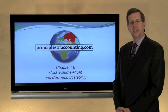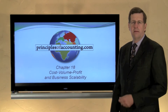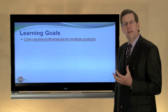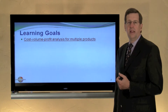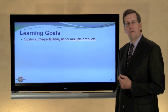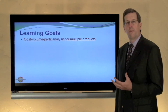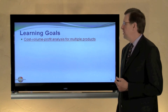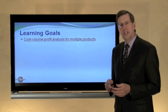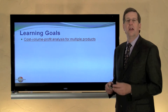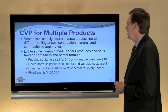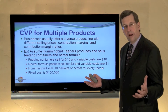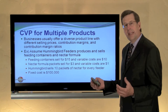I'm Larry Walther and this is principlesofaccounting.com, Chapter 18. In the previous module we considered CVP, or cost-volume-profit, analysis for a single product. Oftentimes however a business will deliver multiple products, each involving a unique contribution margin and contribution margin ratio. In this module we are going to consider CVP analysis for firms that have multiple products, recognizing that businesses may offer a diverse set of products each having a unique selling price.